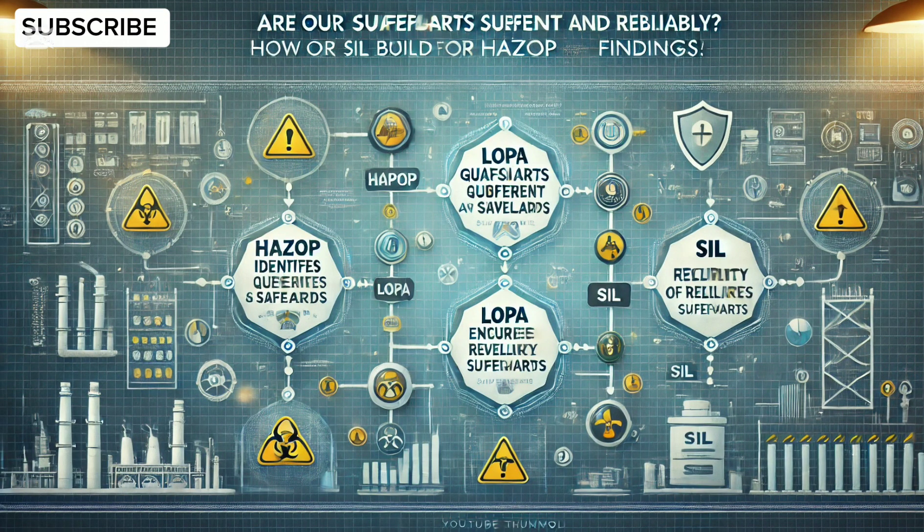After completing a HAZOP study, the next logical question is: are our safeguards sufficient, and how reliable are they? This is where SIL and LOPA come into play.